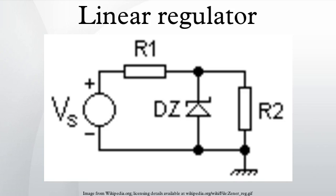When the output regulated voltage must be higher than the available input voltage, no linear regulator will work. In this situation, a switching regulator of the boost type must be used. Most linear regulators will continue to provide some output voltage — approximately the dropout voltage below the input voltage — for inputs below the nominal output voltage, until the input voltage drops significantly.